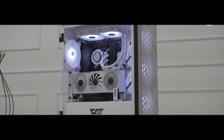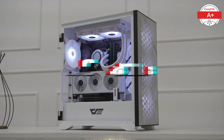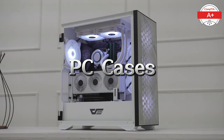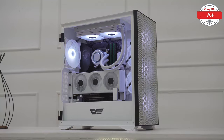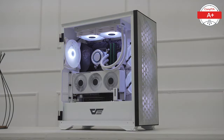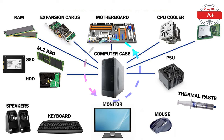Welcome to our CompTIA Plus Core 1 study series. As from the previous lesson, you now know all the parts you need to build your PC. But each of these parts have different sizes and different specifications. Starting from this video, we will begin deep diving into each of these parts separately. In today's video, we'll be diving into the different types of PC cases. Understanding these is crucial to anyone looking to build or troubleshoot computers. Let's get started.